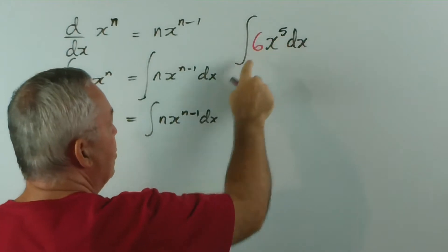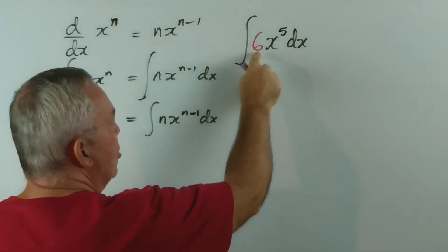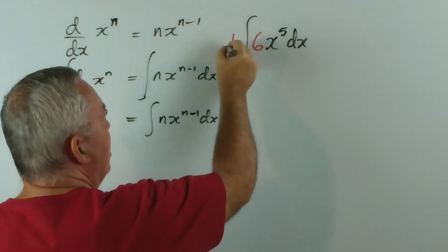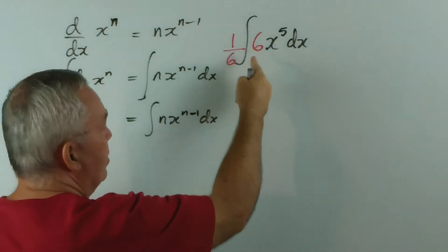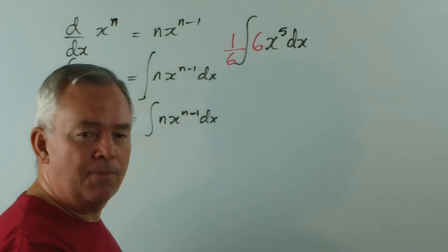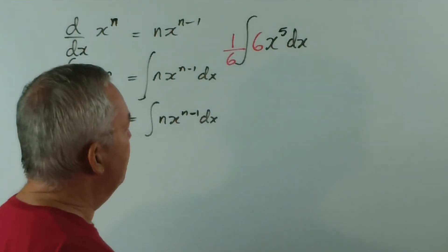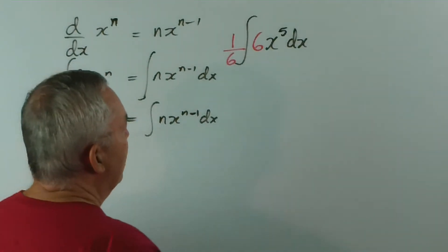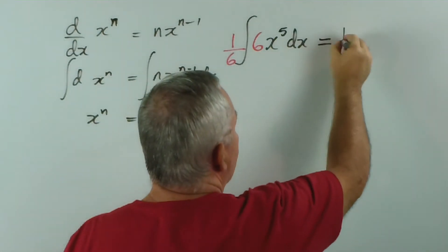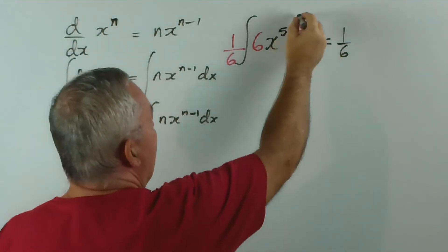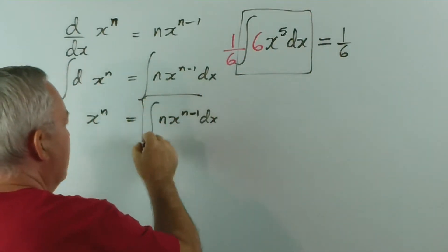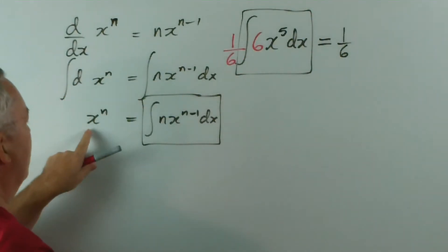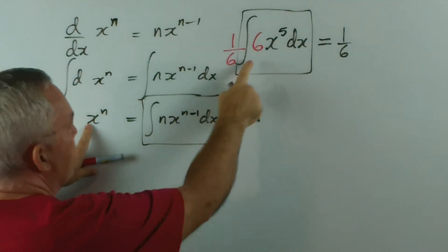And if I multiply this in here by six—you can see that six is one more than five—to compensate, I have to divide on the outside by six, because one-sixth of six is one. And that means that the result is one-sixth, and this integral, following this pattern, provides x to the power of six.